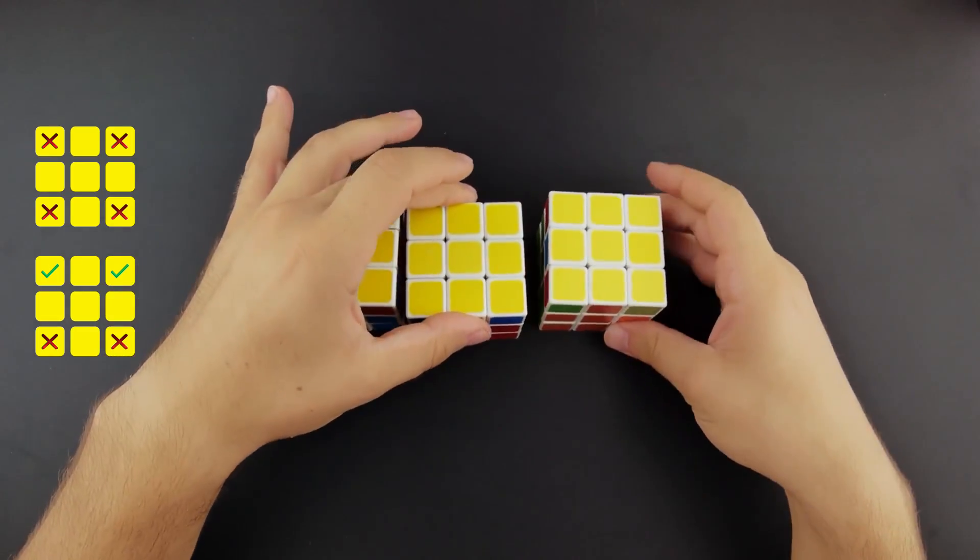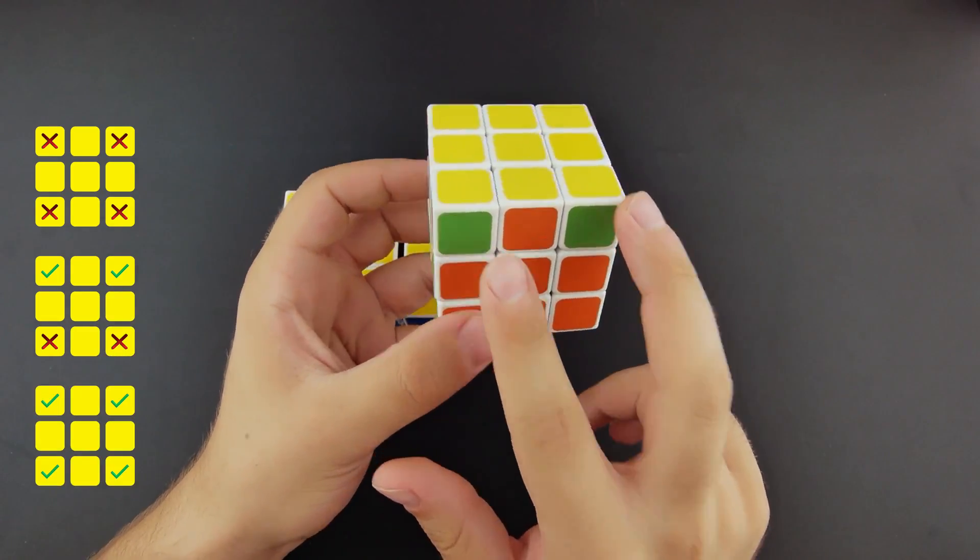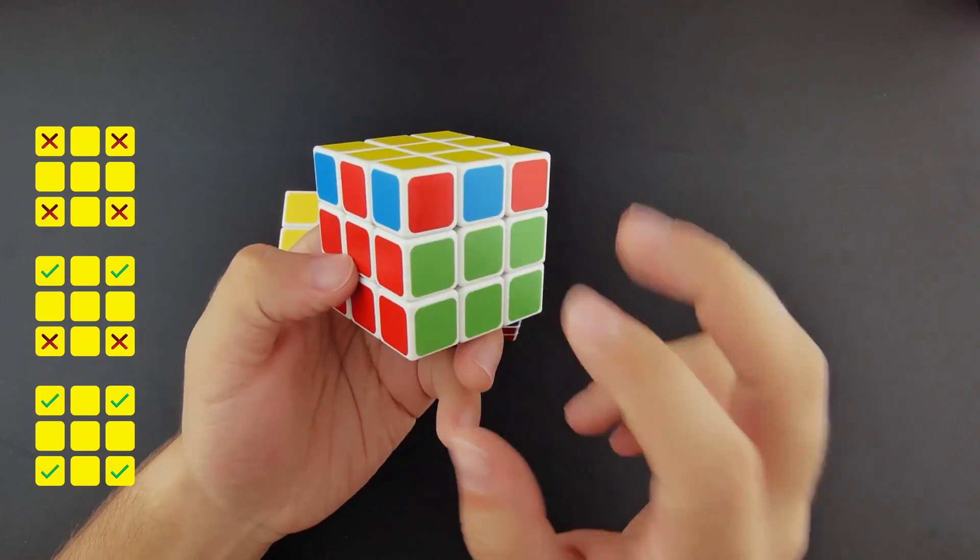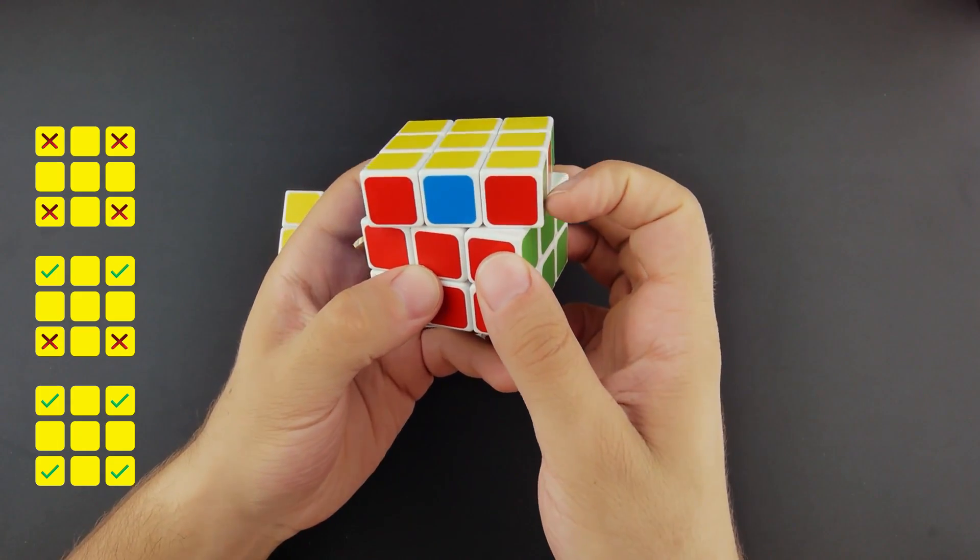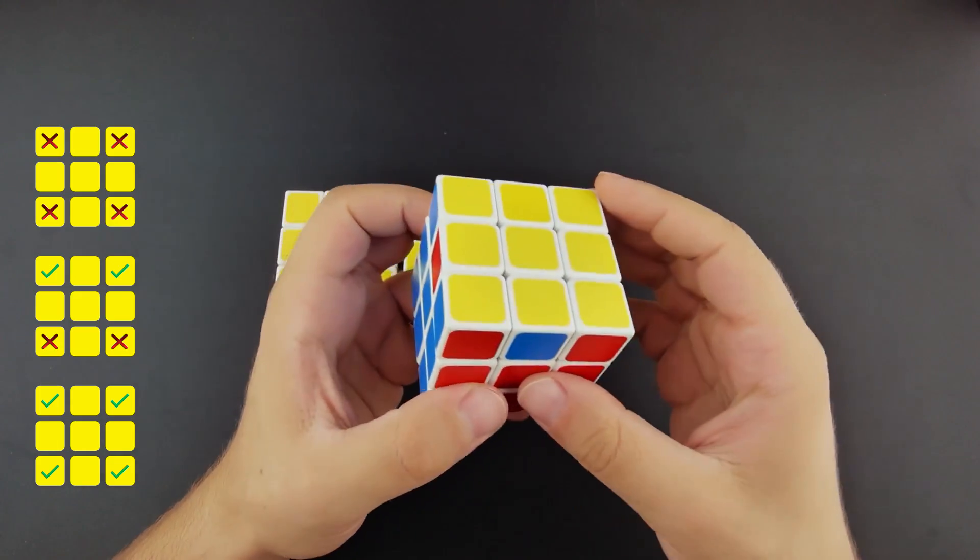And finally, if you are lucky enough, all your corners will match each other. In that case, all you have to do is align them with the rest of the cube and go to the next step.